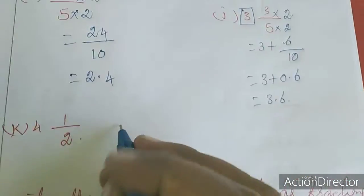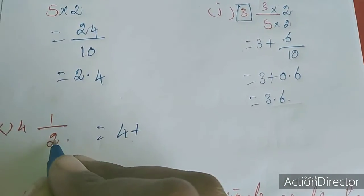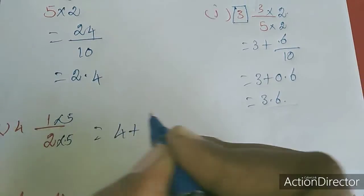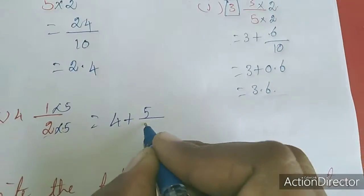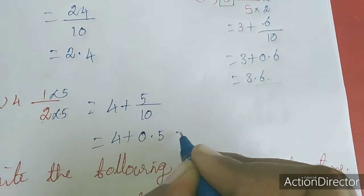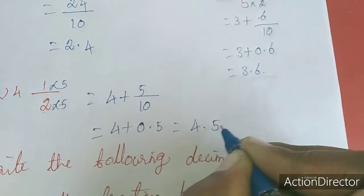Here it is 4 plus 1 by 2. Multiply by 5: 1 times 5 is 5, 2 times 5 is 10. So 4 plus one digit after dot, 0.5. Add both, 4.5.